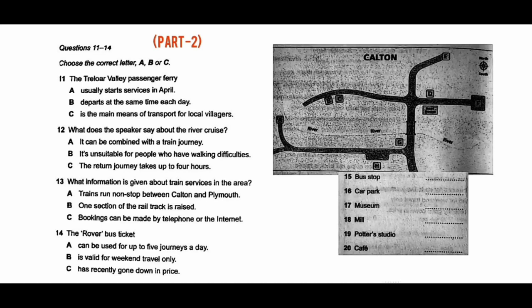Trains run several times a day throughout the year between Calton and Plymouth, with various stops in between. They are used by both local commuters and tourists who want to enjoy the beautiful scenery. The highlight of the journey is crossing the river on the stunning viaduct, which was built at the beginning of the 20th century and towers 120 feet over the water. It is unnecessary to book, and tickets can be bought on the train. The bus service now connects all train stations and villages in the area. A rover ticket for weekends and national holidays allows unlimited journeys — an adult ticket costs £5.50, senior citizens £4.50, and a family ticket for up to five people costs £12.